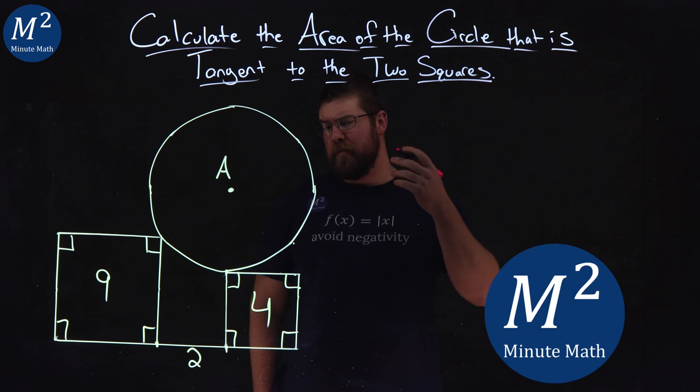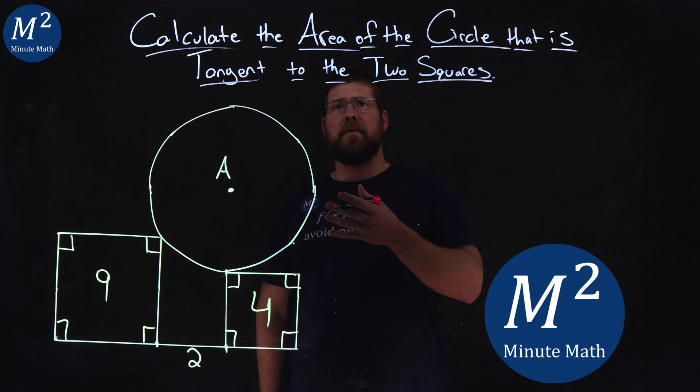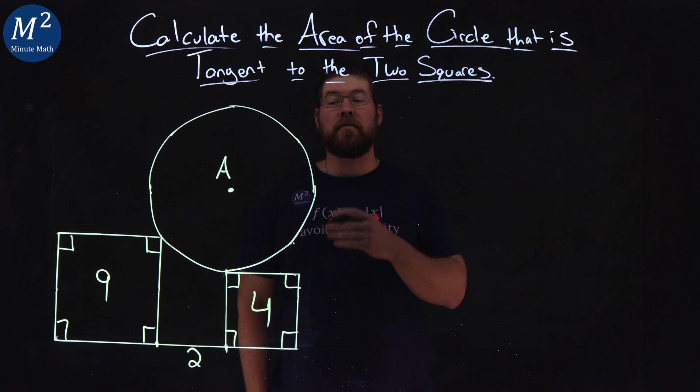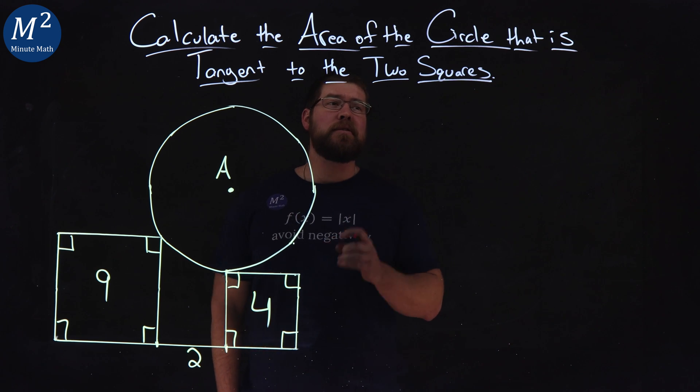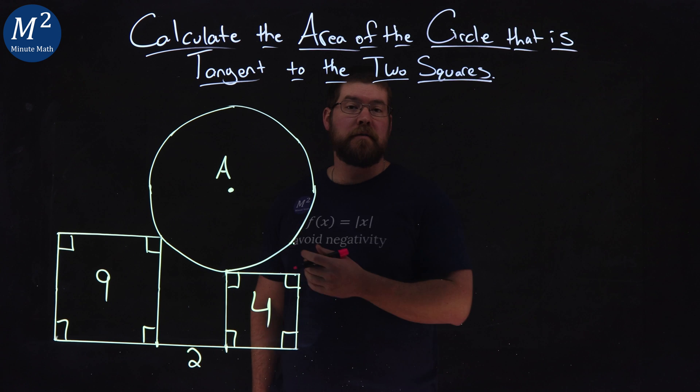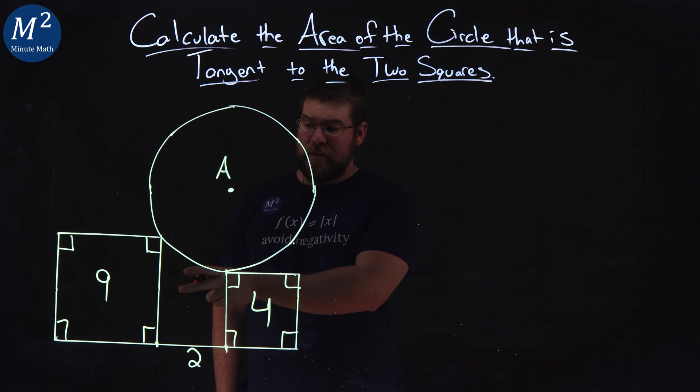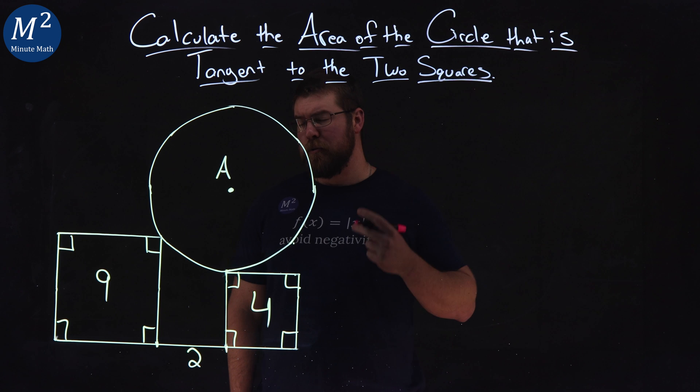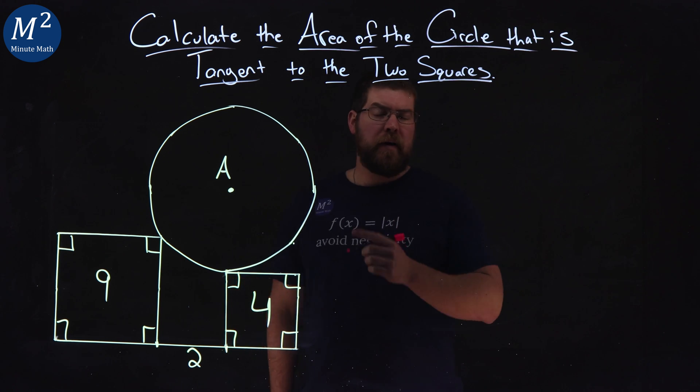Hi, I'm Sean Gannon and this is MinuteMath. We have a shape here where we want to calculate the area of the circle that is tangent to two squares. Our two squares have areas 9 and 4, and the distance between the two squares is 2. Do you know how to calculate the area of the circle?